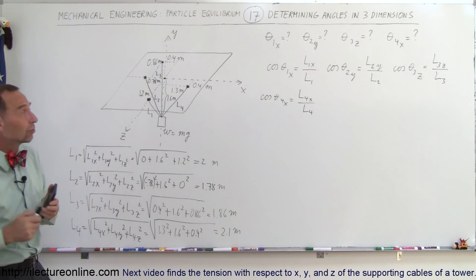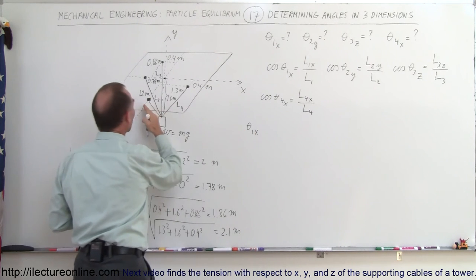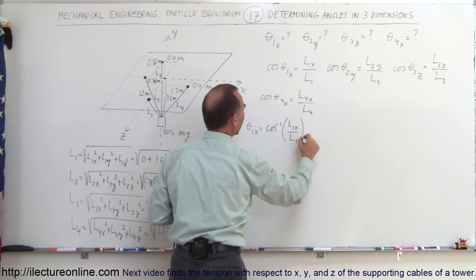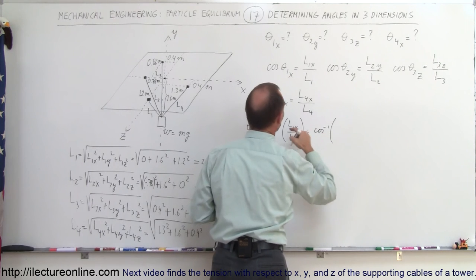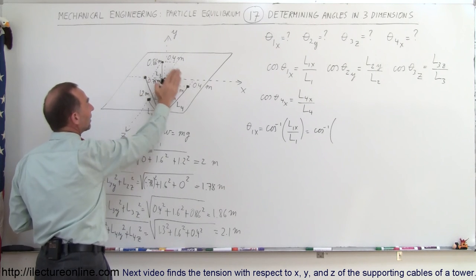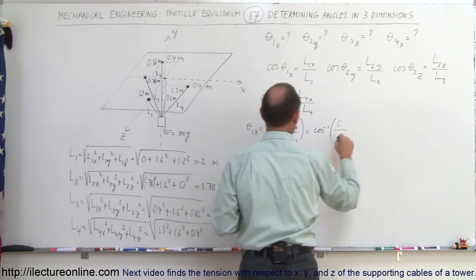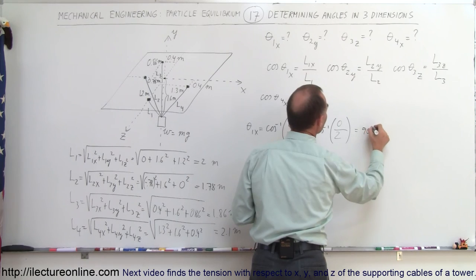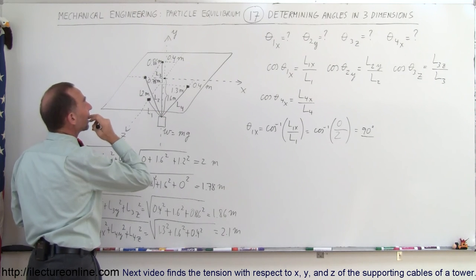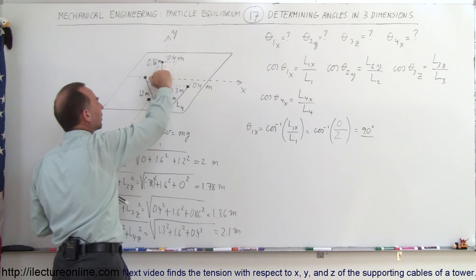Now we find the angles using the direction cosines. The angle theta sub 1 relative to the x-axis equals the arccos of L1 in the x-direction divided by L1. The x-component of L1 is 0 because it lies right on the y-z plane. So arccos of 0 divided by 2 equals arccos of 0, which is 90 degrees. L1 makes a 90-degree angle with the x-axis, which makes sense visually as it's perpendicular to it.